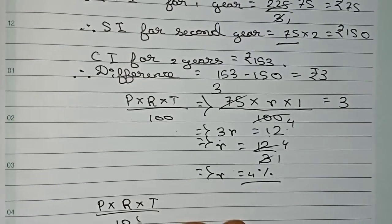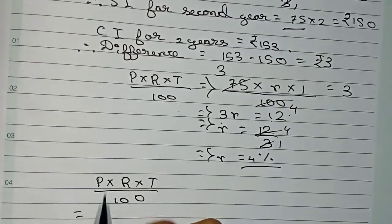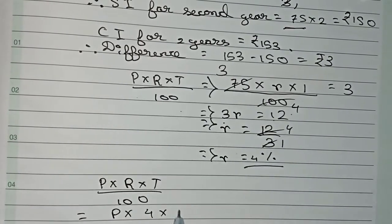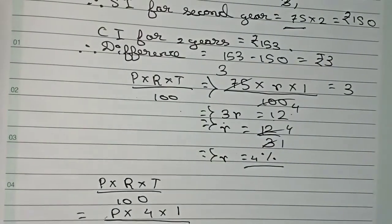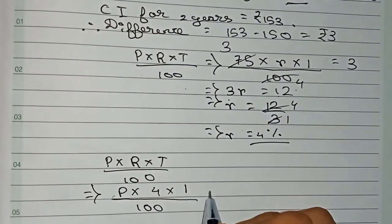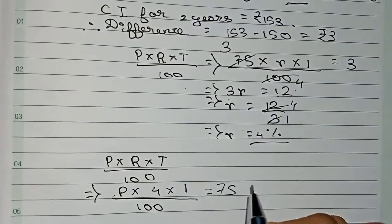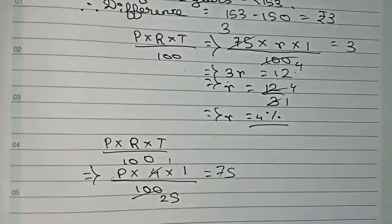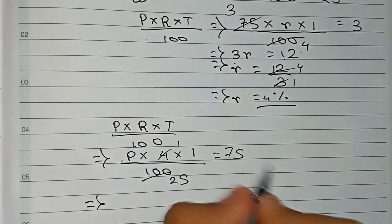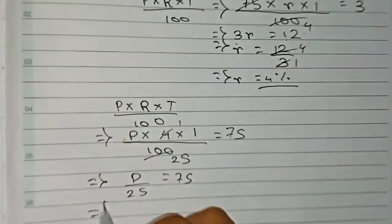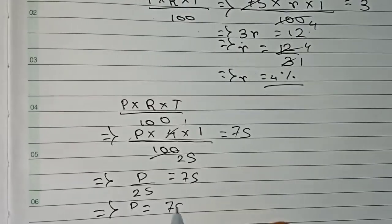Put down the values: P×4×1/100 = 75. Cutting by 4, it becomes P/25 = 75. Therefore, P = 75×25.